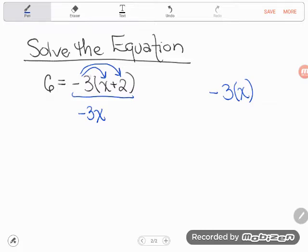And now I need to multiply negative 3 by positive 2. You go, but doesn't that say plus 2? Yes, but when I am multiplying, I read it as positive 2.